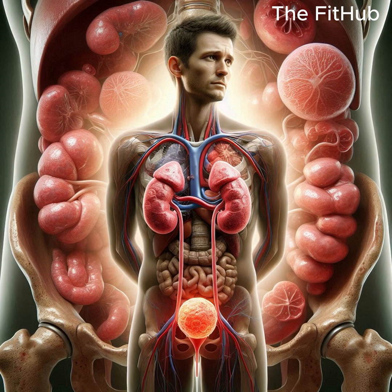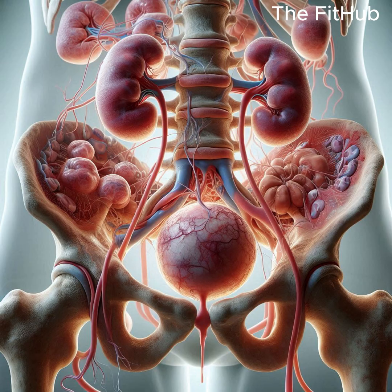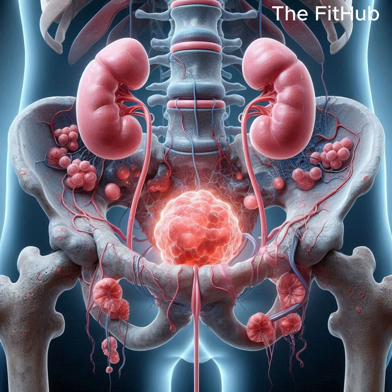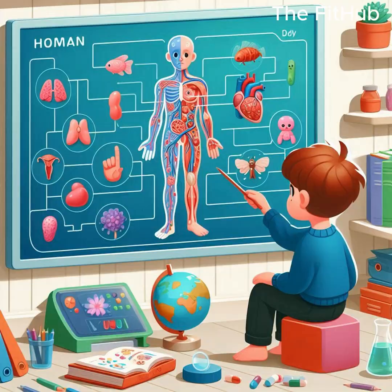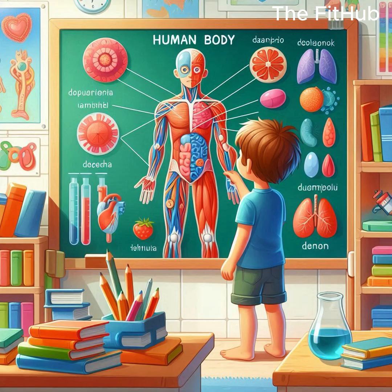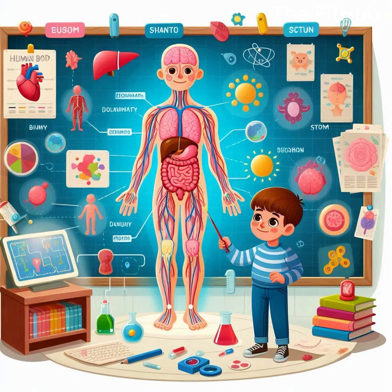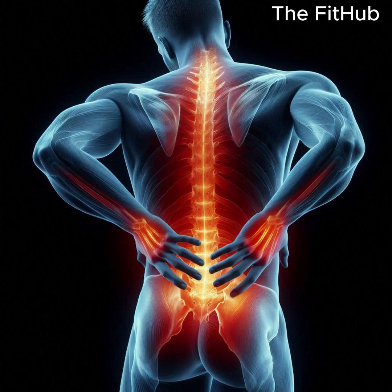Main types of kidney cancer: Renal cell carcinoma (RCC) is the most common type, making up about 90% of adult kidney cancers. It usually begins in the lining of tiny tubes in the kidney.